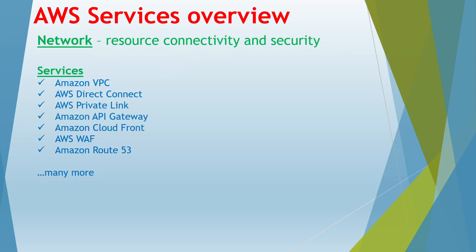Now let's go to the network module. Network services are all about resource connectivity and security. When you have EC2 instances, database instances, or any other resources in the cloud, you need to connect them in a network and protect them from unauthorized access. Network services provide features such as Amazon VPC — Virtual Private Cloud — which gives you full control over the virtual network, letting you place resources in the network and secure them.